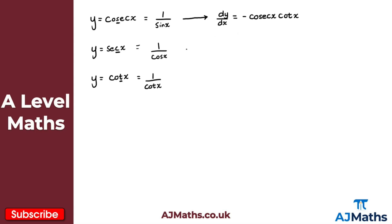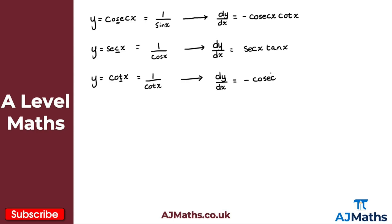When I differentiate sec x, we get dy by dx equals sec x multiplied by tan x. And then finally, when I differentiate y equals cot x with respect to x, we get dy by dx equals minus cosec squared x. So those are the three results that we need.